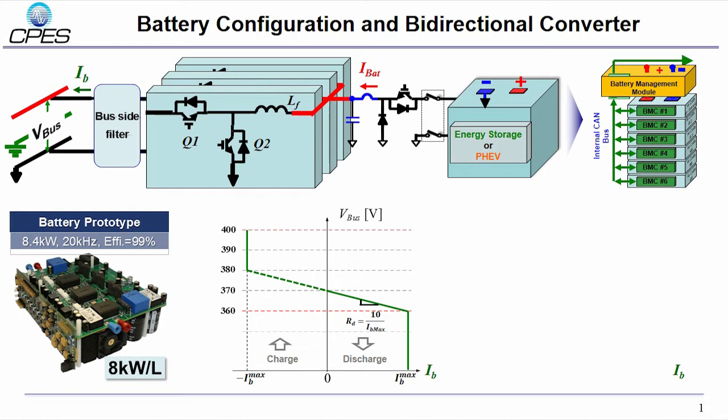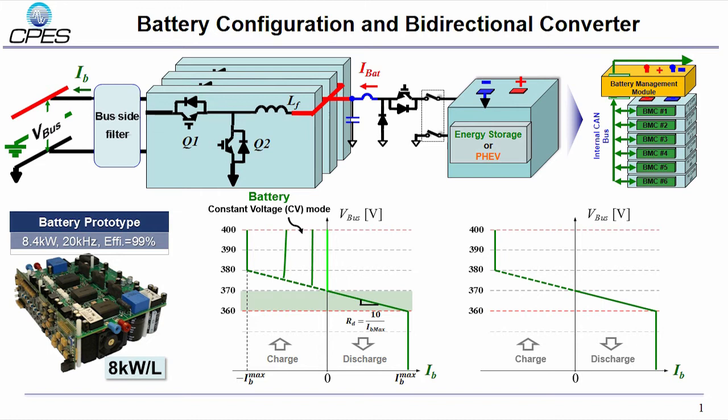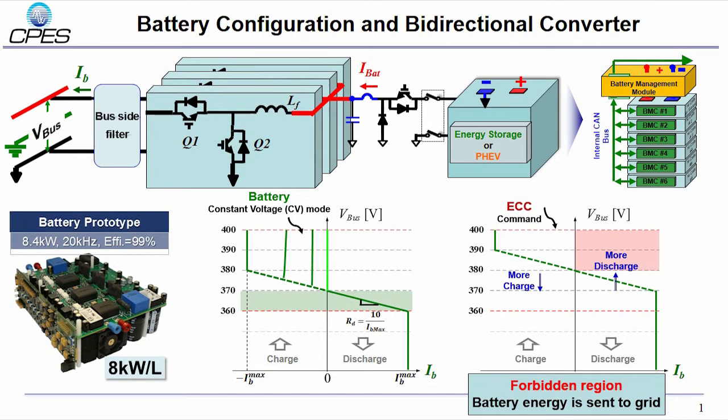The 8.4kW bi-directional buck-boost converter is used to provide the interface between energy storage and the DC bus. The switching frequency of the prototype is 20kHz with 99% efficiency. Control of battery converter follows the graph shown in the lower middle. Different with ECC converter, battery converter regulates the DC bus under 370V drawn in the solid line. While the dashed lines follow the current command in constant voltage charging mode and will not regulate the bus. Besides the battery's intrinsic management, it also accepts commands from ECC by shifting the battery roles up for more discharge and down for more charge. The red shaded area is defined to be the forbidden region since the battery's energy is sourced to grid. What is more, battery's converter will also accept current commands from Energy Control Center.